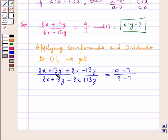Now in the numerator, 13y and minus 13y cancels. In the denominator, 8x and minus 8x cancels. So further we get 16x upon 26y is equal to 16 upon 2.